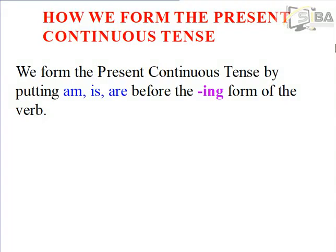Now, let's look at how we form the present continuous tense. We form the present continuous tense by putting am, is, or are before the -ing form of the verb.